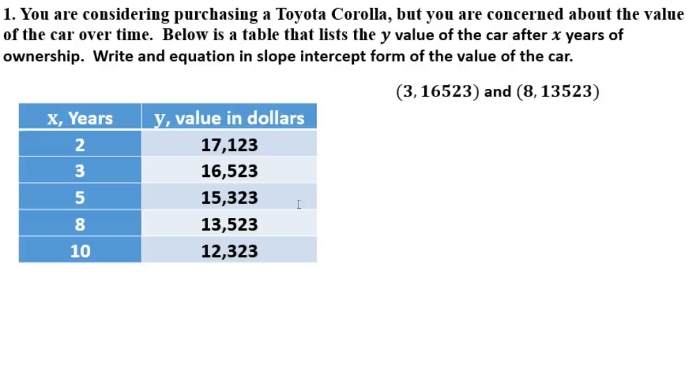The very first thing we're going to do is come up with our slope. When we're given two points, we're going to use it the same in this real-life scenario as we do in our other practice. We bring in our slope formula: y2 minus y1 divided by x2 minus x1.